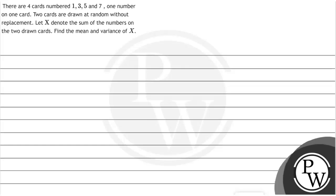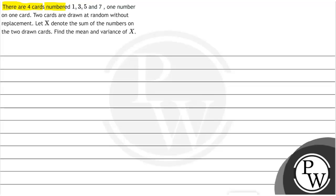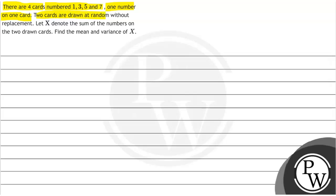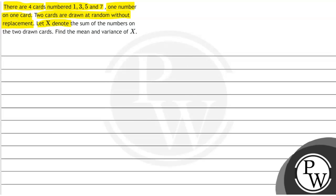Hello Bacho. Let's read the question. The question says there are four cards numbered 1, 3, 5 and 7 — one number on one card. Two cards are drawn at random without replacement. Let X denote the sum of the numbers on the two cards drawn. Find the mean and variance of X.